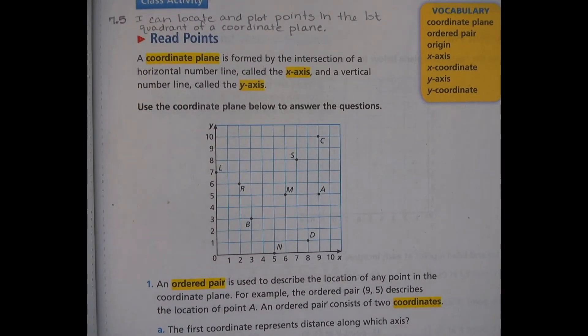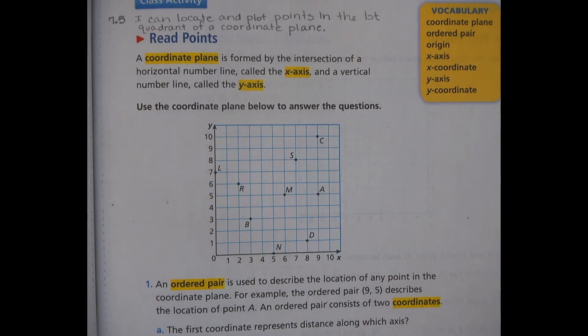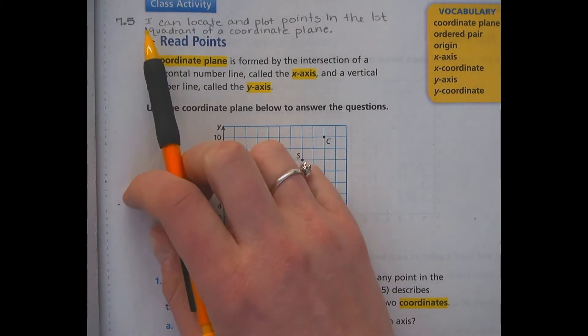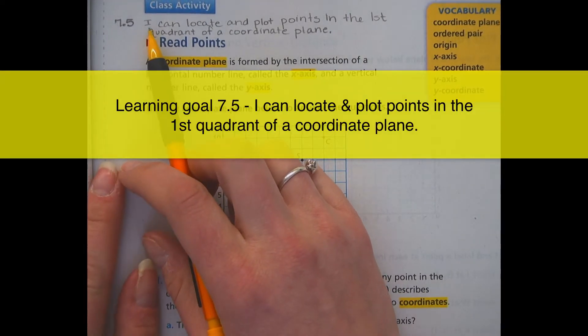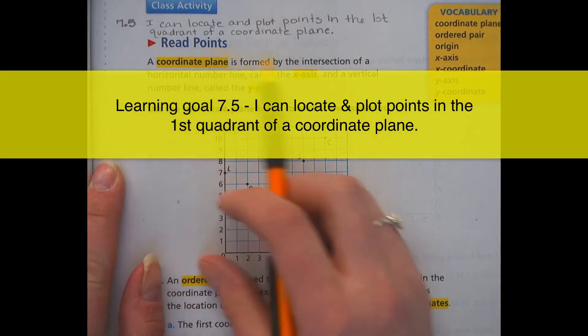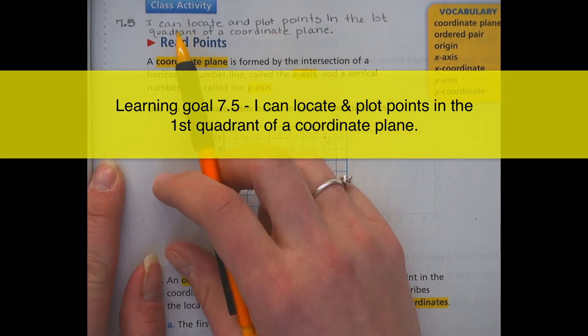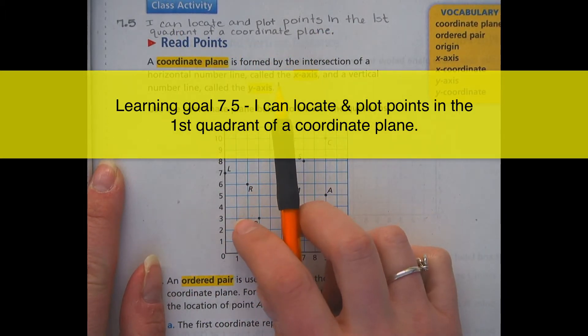We are going to move into learning goal 7.5, and you'll notice this looks a little bit different than normal. We actually made a copy of your old practice book page for you to write on because of the grid. It makes it really hard to do without actually having one to write on. So for this one, you actually have a paper that looks like this, only it's not colored. Right at the top, I put our learning goal because it's important that you remember those. I can locate and plot points in the first quadrant of a coordinate plane.